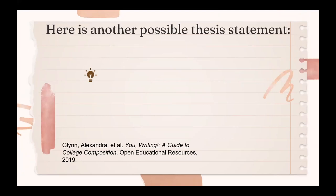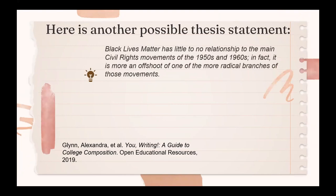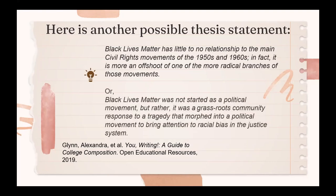Here's another possible thesis statement: 'Black Lives Matter has little to no relationship to the main civil rights movement of the 1950s and 60s; in fact, it is more an offshoot of one of the more radical branches of those movements.' Again, we've got a topic and a comment about it, but this author has offered a different interpretation of the same historical events. A third option: 'Black Lives Matter was not started as a political movement, but rather it was a grassroots community response to a tragedy that morphed into a political movement to bring attention to racial bias in the justice system.' All three thesis statements use the same topic — Black Lives Matter — but the author's comments are different. All three work because they have a topic and comment on it in an interesting way.